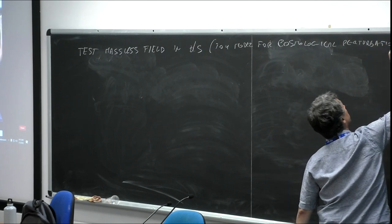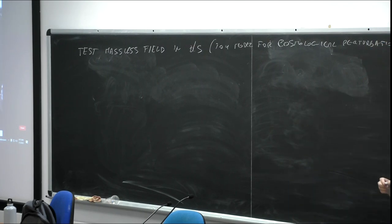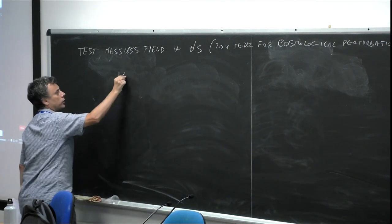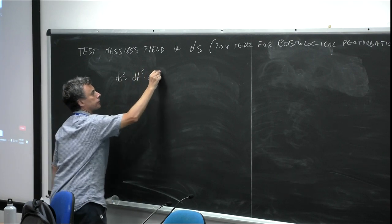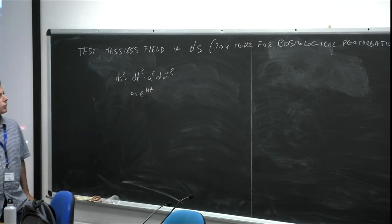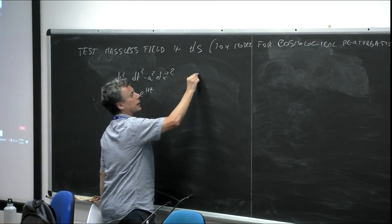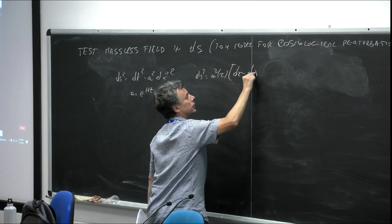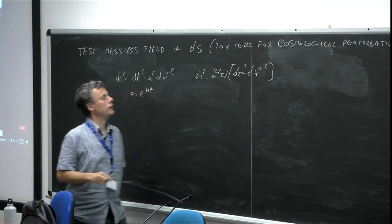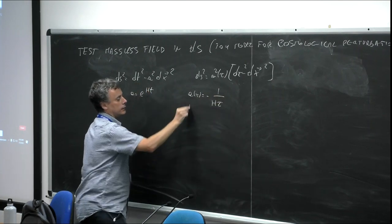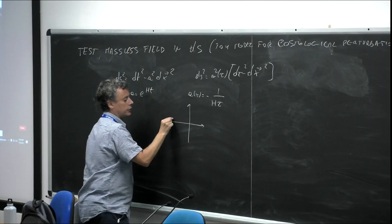I'm not going to perturb the metric, and by 'test' I mean I neglect the energy of this field from the point of view of the expansion of the universe. For the de Sitter line element, we can use physical time — in that case a equals e to the Ht — or conformal time τ, where the scale factor is written as minus one over Hτ. Inflation in de Sitter is done in the portion where τ goes to zero minus, so during inflation the scale factor grows like this.